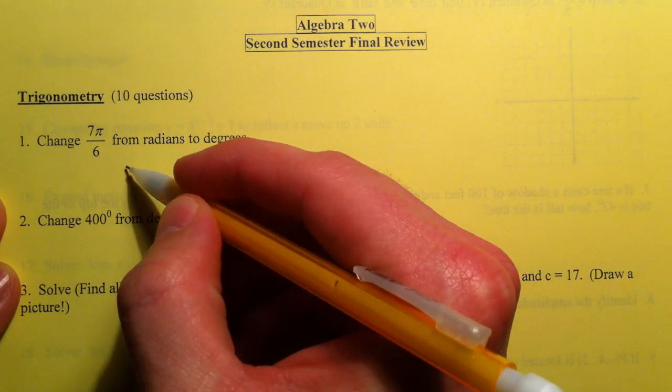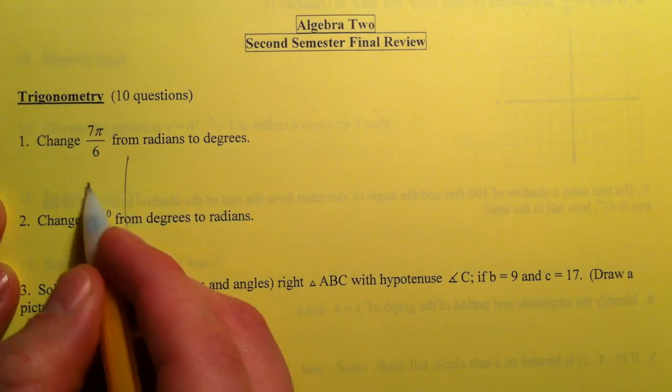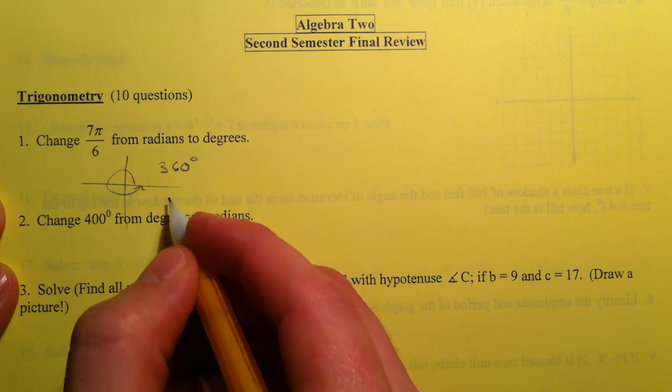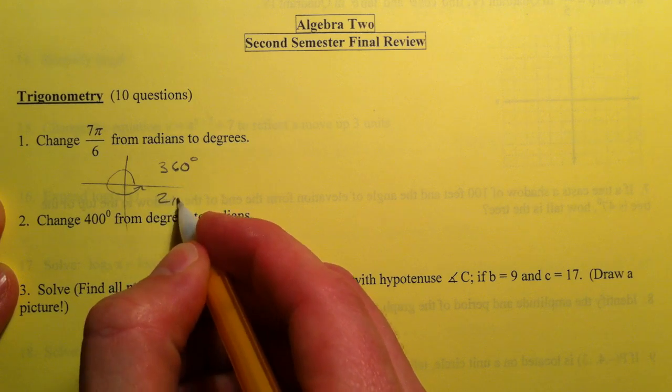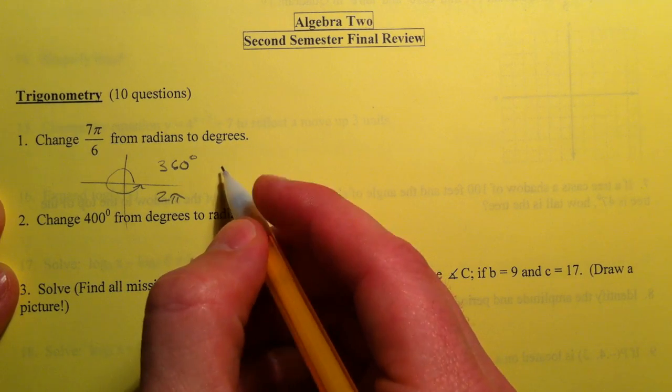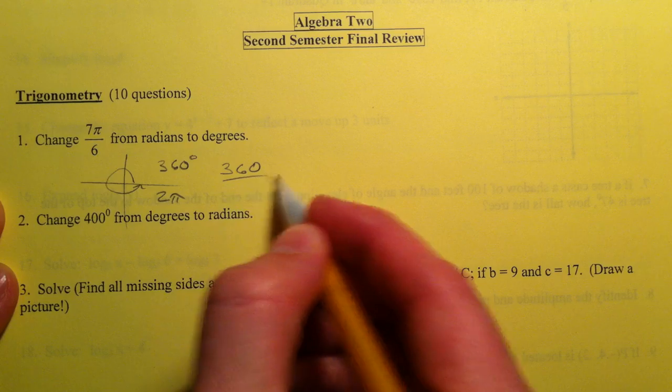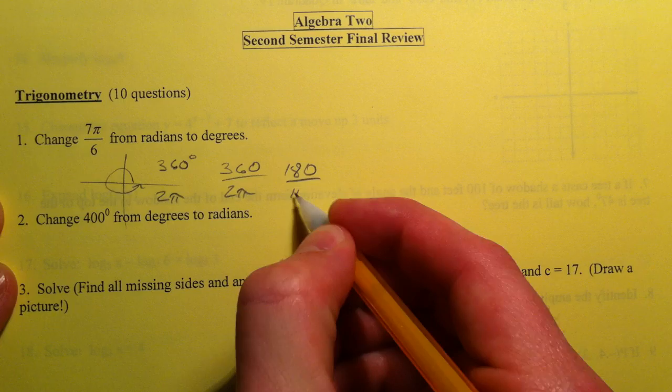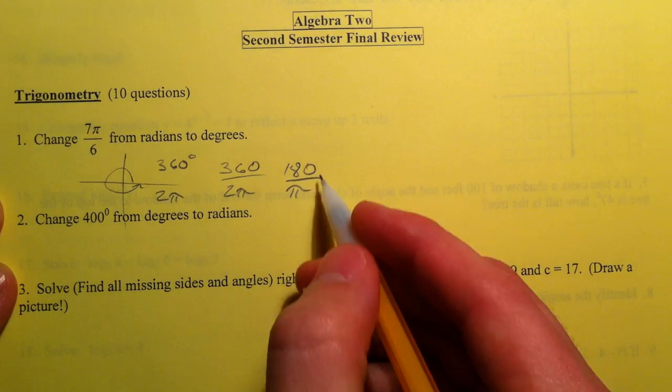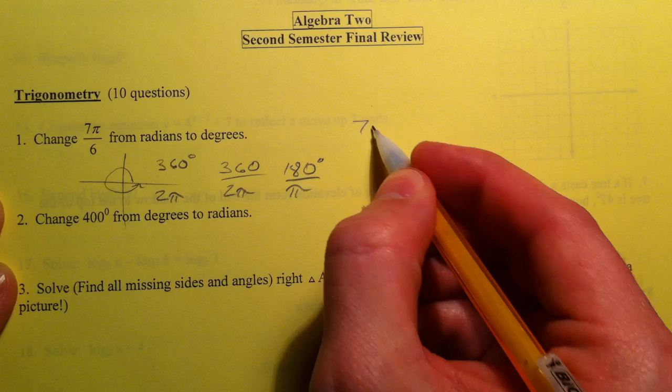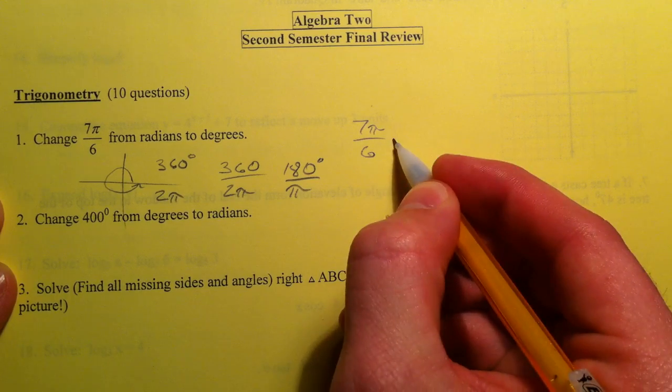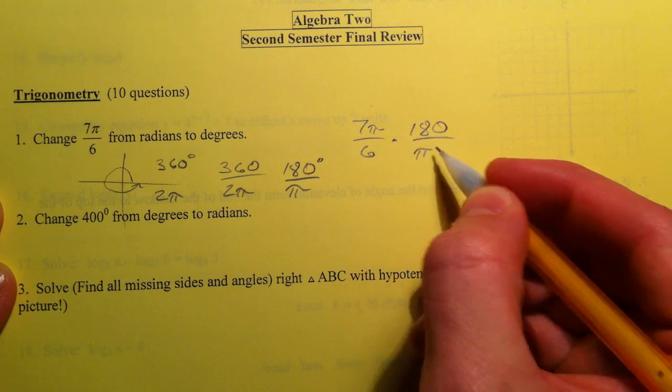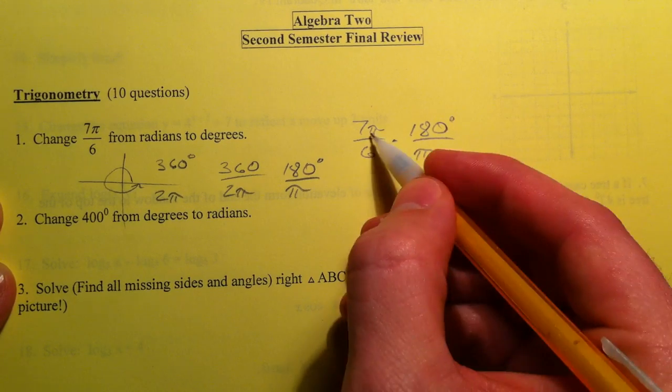For problem one, you can remember that all the way around the circle is 360 degrees, and all the way around the circle is 2π radians. So we use 360 over 2π, or 180 over π being a ratio of 1 to 1. And so we can multiply 7π over 6 by 180 over π, because this is just 1.